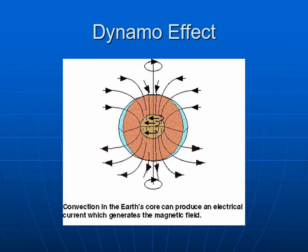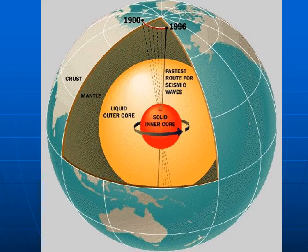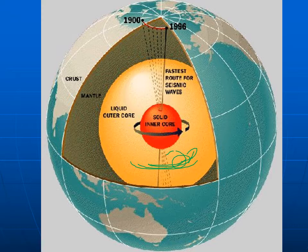The key to this whole thing is the outer core of the Earth, and the outer core of the Earth is liquid. If it were not liquid, you would not get the turbulence, you would not get the convection, you would not get the electrical current through there, and you would not get a magnetic field.